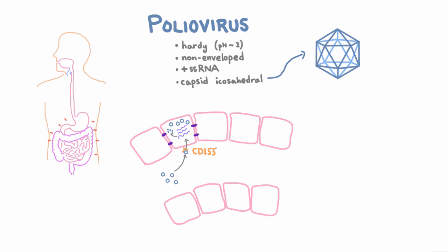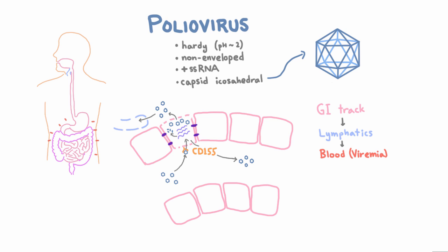New viral particles are assembled, which then lyse — in other words, kill the infected cell. This lysis releases many viral particles. Some go into the feces, and others stick around in the interstitium around the infected cells. Fluid and material in the interstitium gets swept into lymphatic vessels and passes through nearby lymph nodes. Eventually all lymph gets dumped back into the blood, so through this mechanism poliovirus gets into the blood — we call that viremia, where 'emia' means it's in the blood.